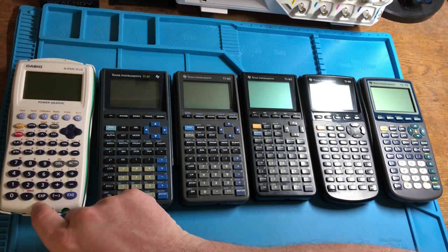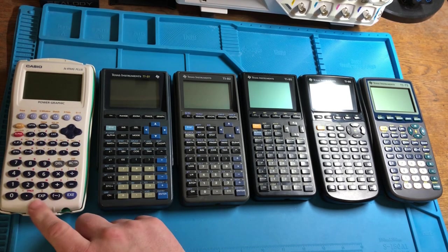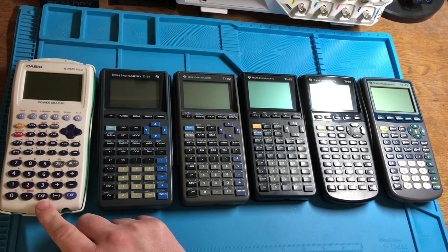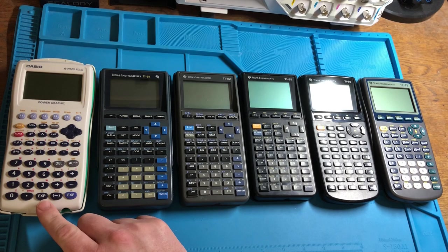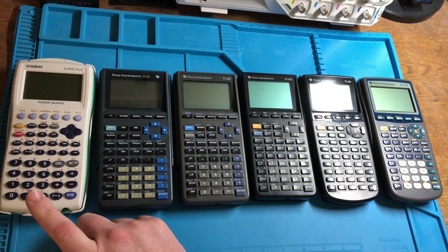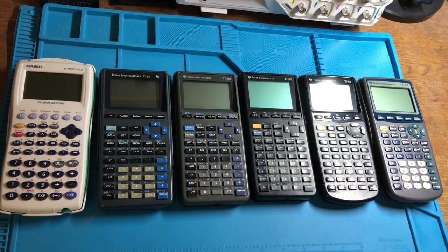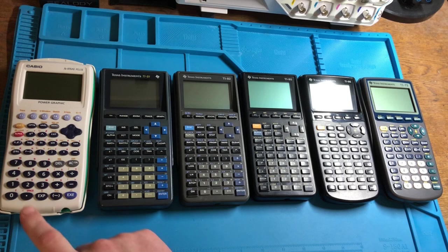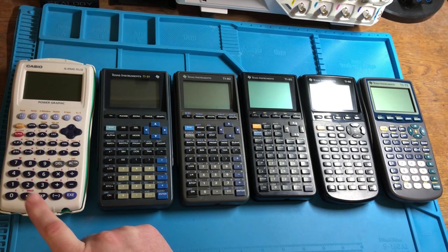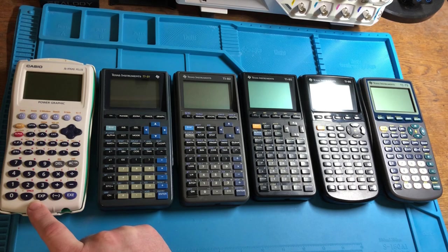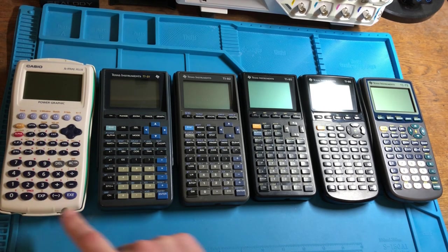I'll start with this Casio FX 9750G Plus. This is a device I found while thrift shopping. I purchase calculators when I see them in thrift shops. This was five dollars so I picked it up. I have a little bit of buyer's remorse for it. I'm not interested in this calculator at all.